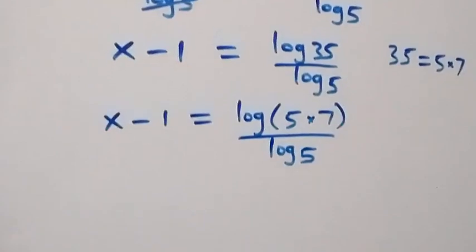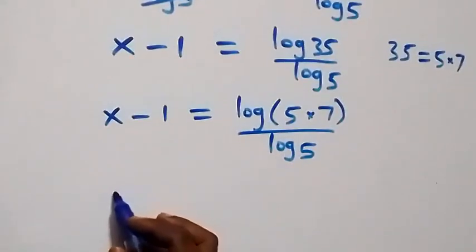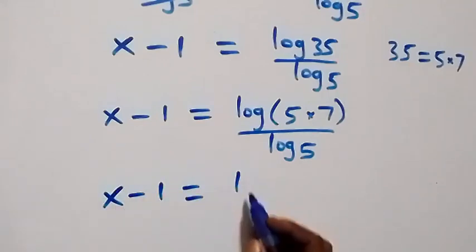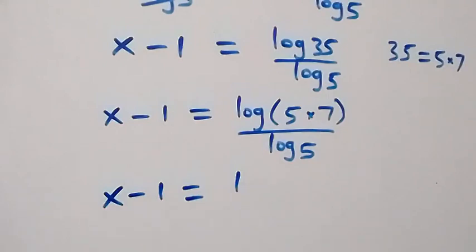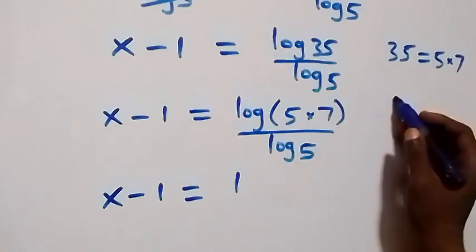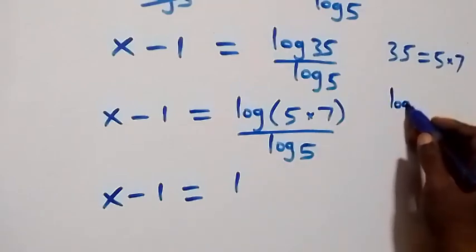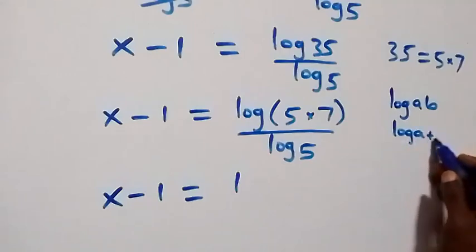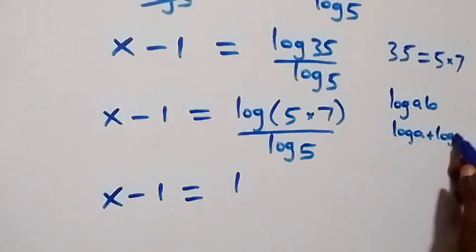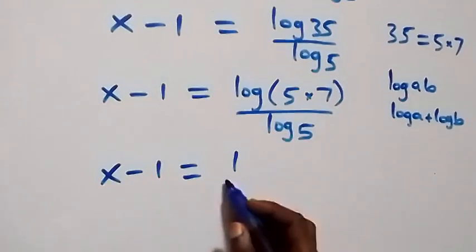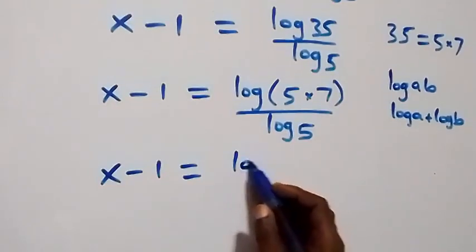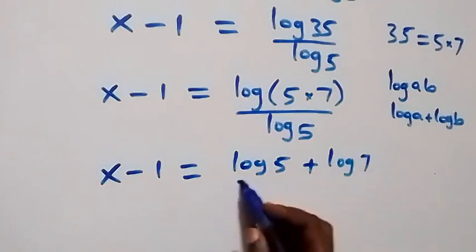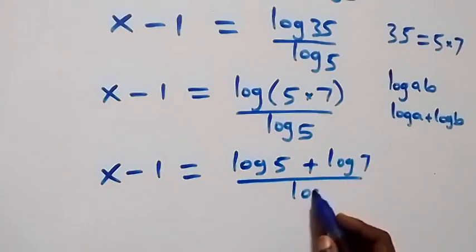We can separate this fraction. First, we apply the law of logarithms: log of a times b equals log a plus log b. So the numerator becomes log 5 plus log 7, over log 5.